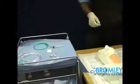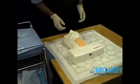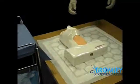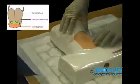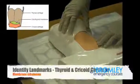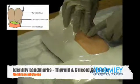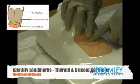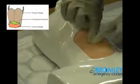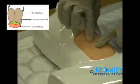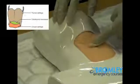This is a demonstration for needle cricothyroidotomy. First, locate the cricothyroid membrane by locating the thyroid cartilage, moving partway down, and identifying the junction between the cricoid and thyroid cartilage, which is the cricothyroid membrane.